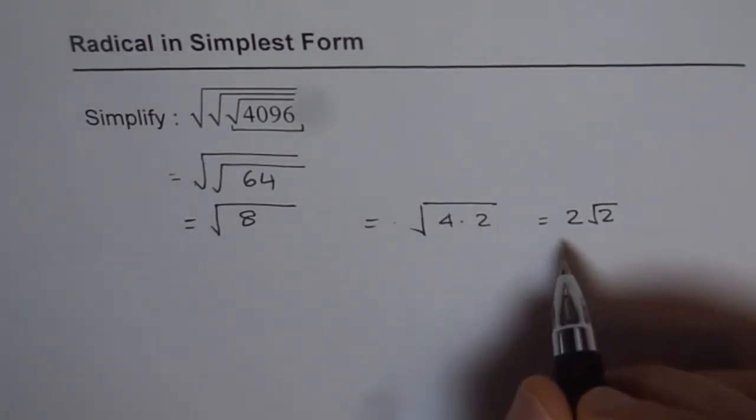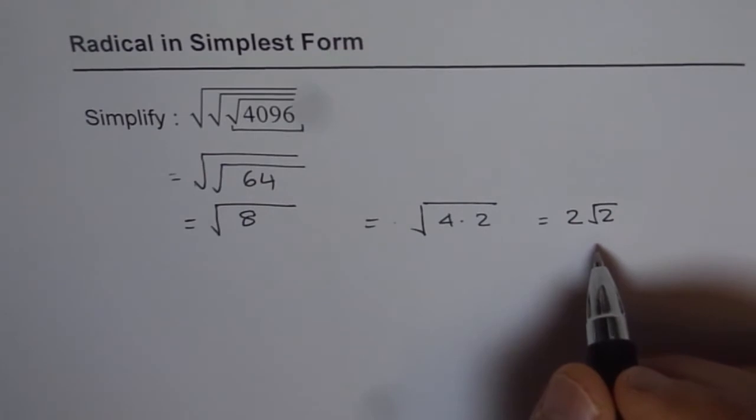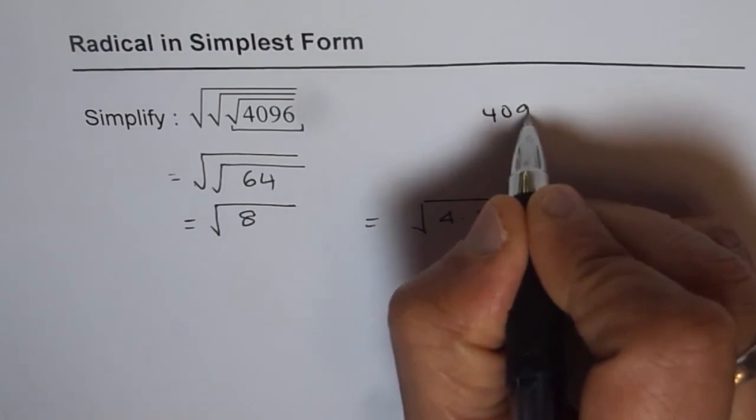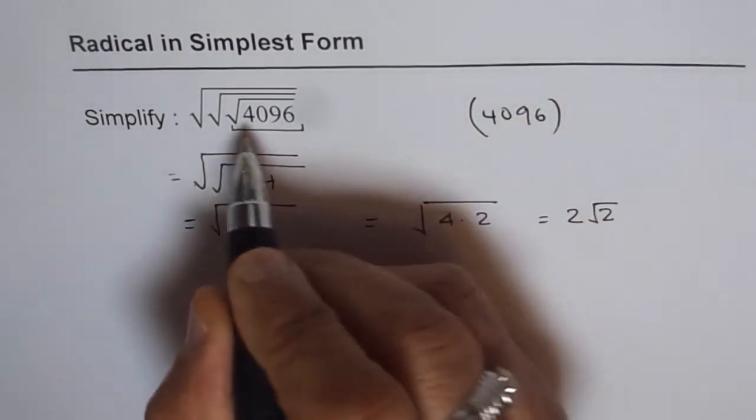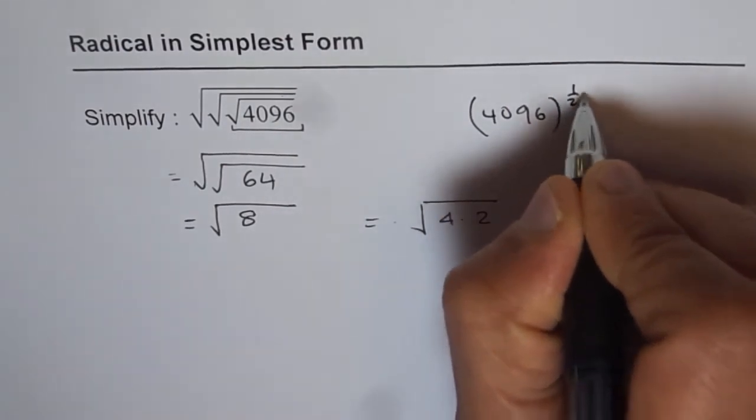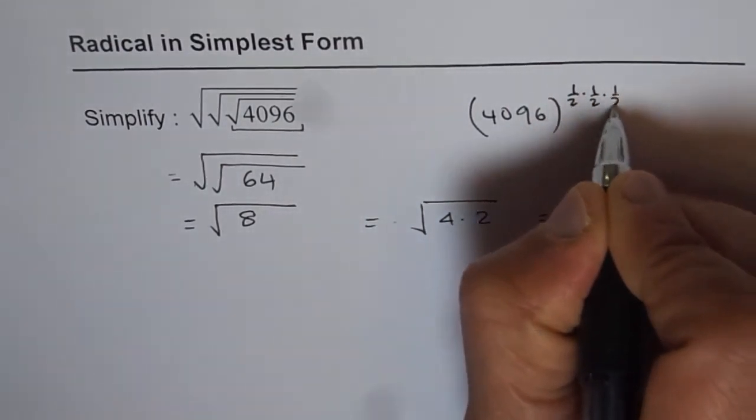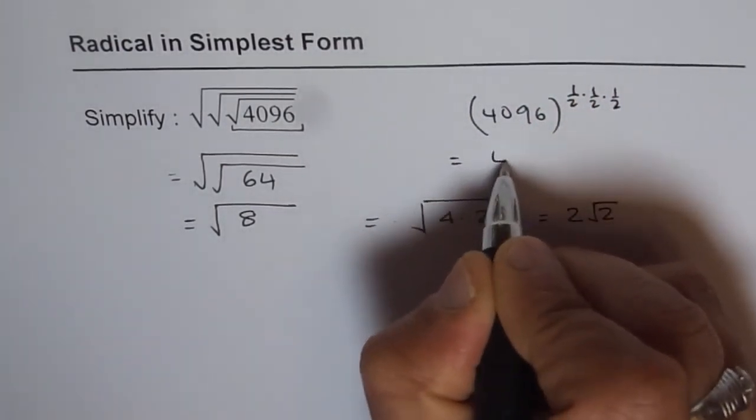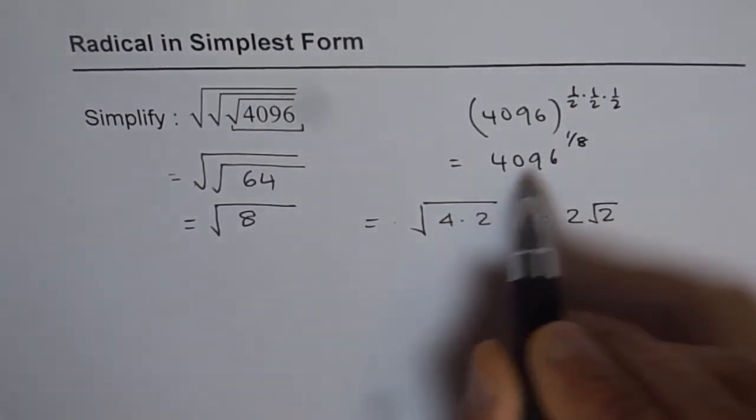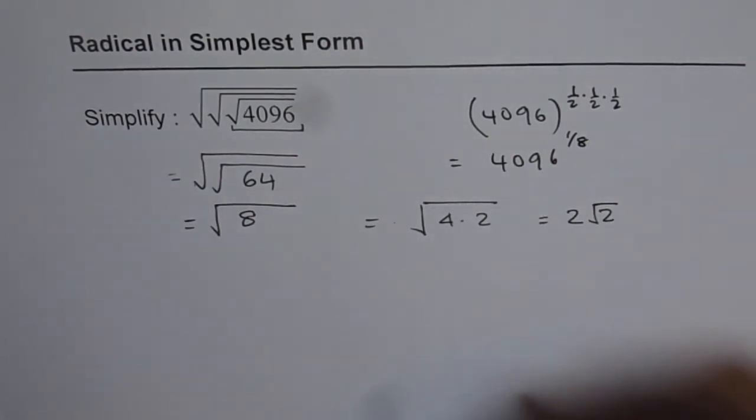So that is how you can simplify it using calculator. Or you could have done this also. You have 4096. You write 4096 to the power of half times half times half, which is equal to 4096 to the power of 1 over 8. And straight away you can use the calculator and get your answer.